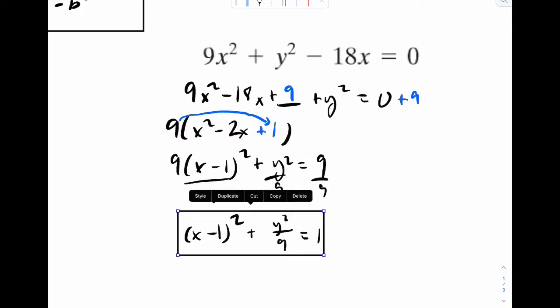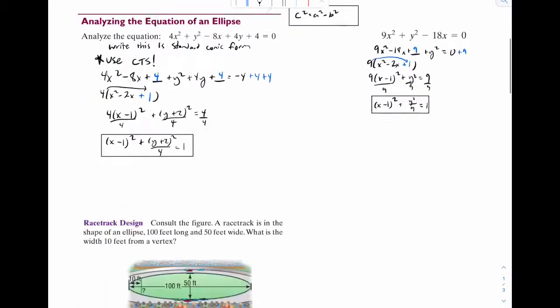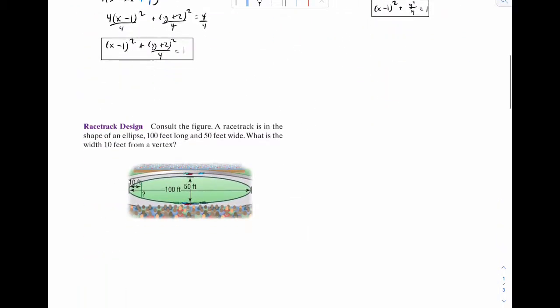Okay. Now let's go to our last example for the video. A word problem. A racetrack is in the shape of an ellipse. 100 feet long. 50 feet wide. What is the width 10 feet from a vertex? So what we're going to do first is superimpose an xy axis here to make it easier.